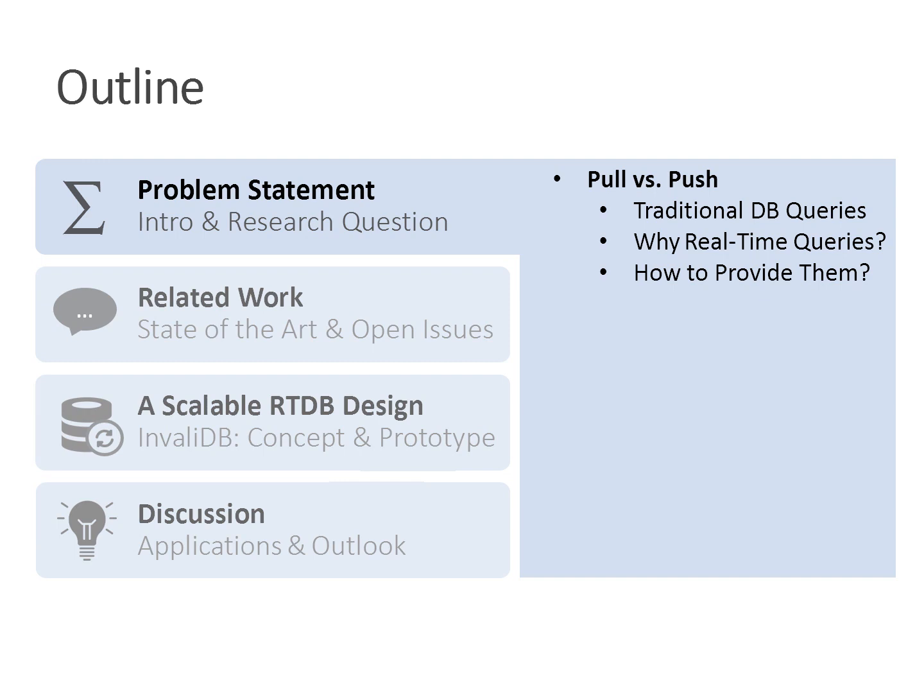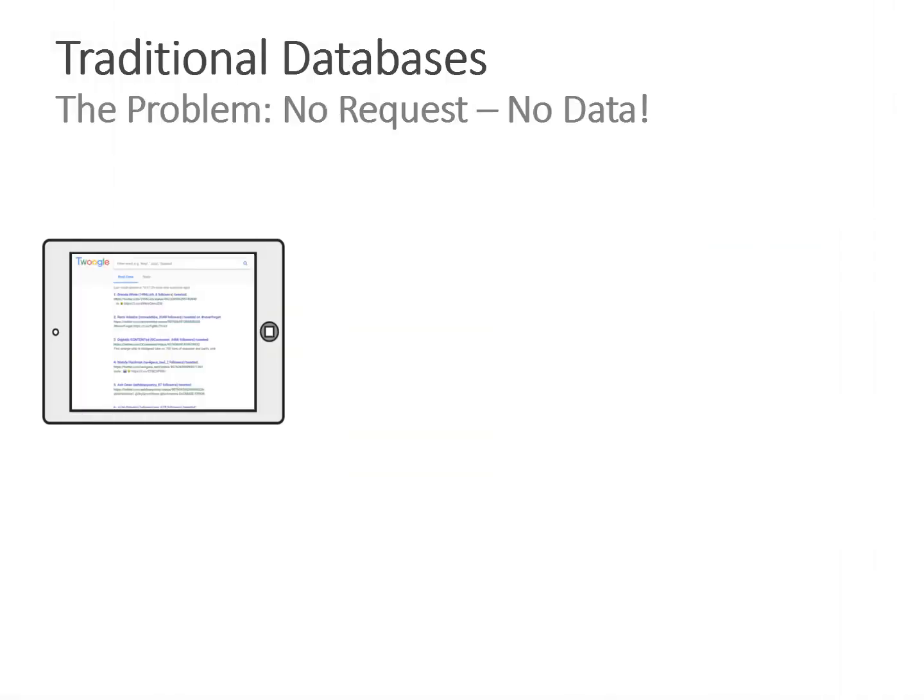This talk is divided into four major parts. First, the introduction, where we talk about the actual problem we're trying to solve and why it's difficult to provide real-time queries. Then we'll talk about related work and uncover issues with existing approaches. Third, we'll explain InvalidDB's design, and fourth, we'll discuss applications and future plans.